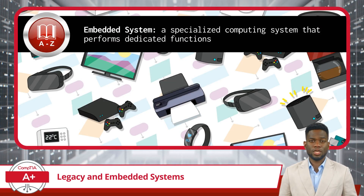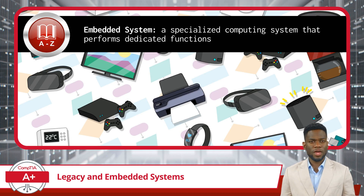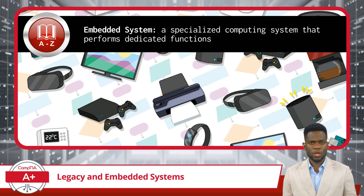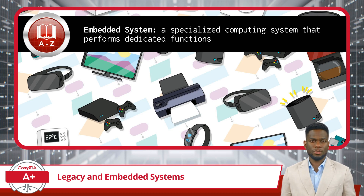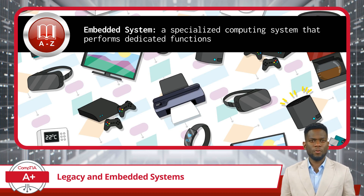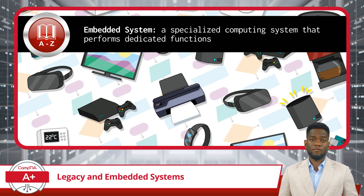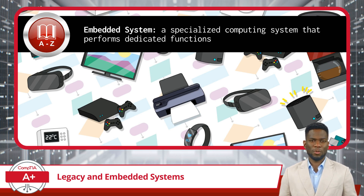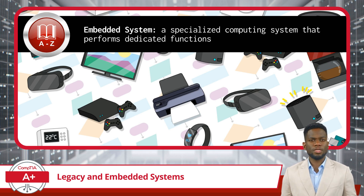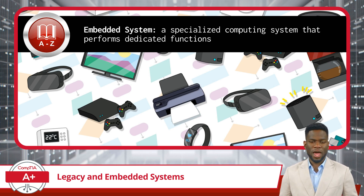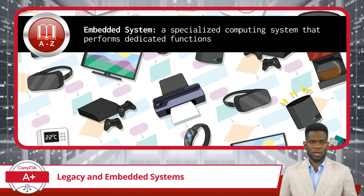Now, let's shift our focus to embedded systems. An embedded system is a specialized computing system that performs dedicated functions. Unlike a general-purpose computer, an embedded system performs specific tasks and is designed with a very specific set of requirements. These systems are ubiquitous in everyday life, found in devices like microwaves, traffic lights, and thermostats. They are known for being highly reliable, efficient, and optimized for their particular application, often running for years without the need for intervention.